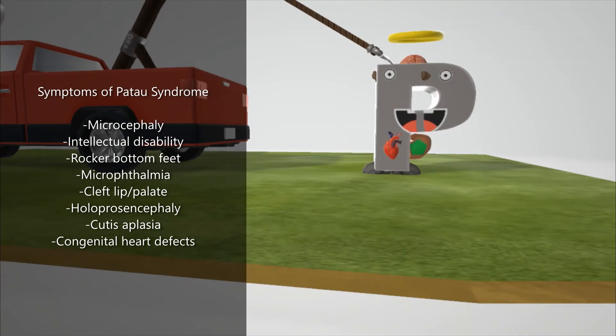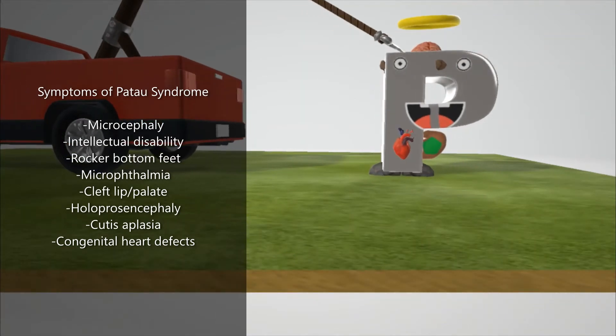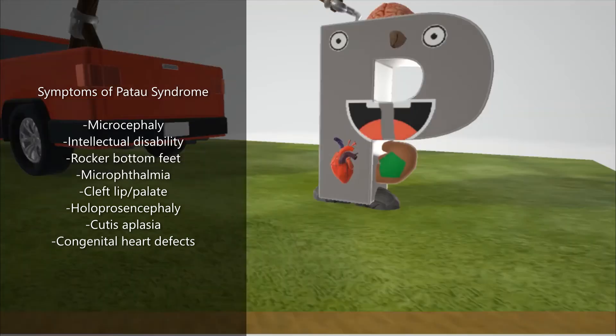You also note that he has very small eyes because microphthalmia is also a symptom. He has an interesting mouth that's cleft, split in half, to help us remember the cleft lip and palate. In Patau syndrome, there's a defect in fusion of precordial mesoderm, and that's why we find this midline defect.